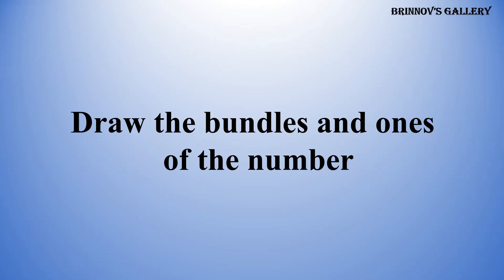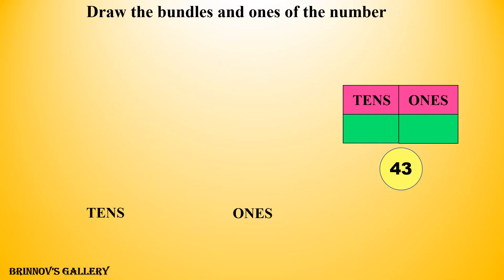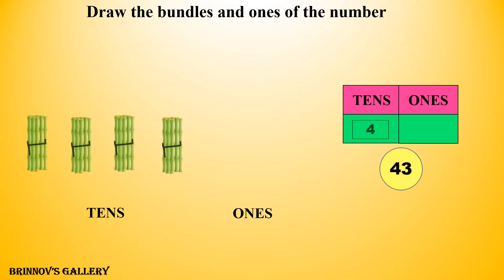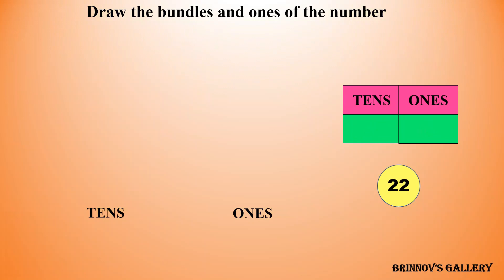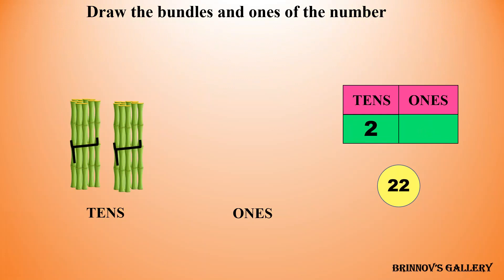Draw the bundles and ones of the number. 43 — 4 tens, 3 ones. 22 — 2 tens, 2 ones.